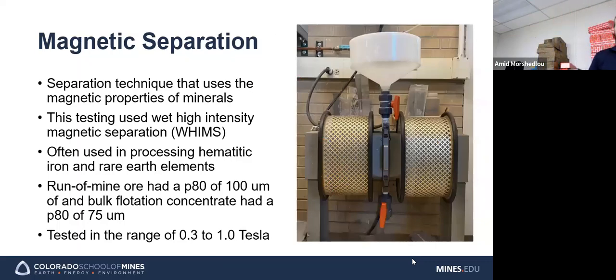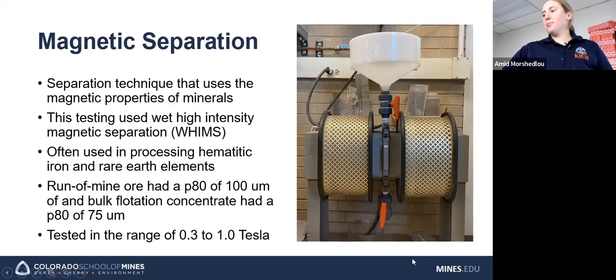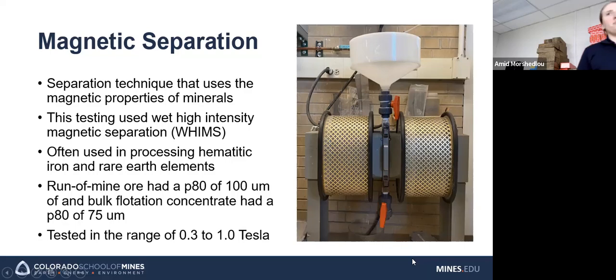So the first technique that we looked at for this physical beneficiation process was magnetic separation, which as the name implied is a separation technique that relies on the magnetic properties of materials. So far, all the testing we've done has been with a wet high intensity magnetic separator, also known as a WHIMS. So how this works very generally is that there is a matrix in this box right here. That can be various different things, ball bearings, expanded metal, expanded metal mesh, steel wool, depending on what size of the material you're putting through.